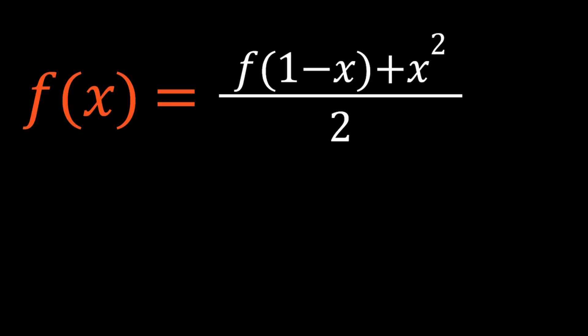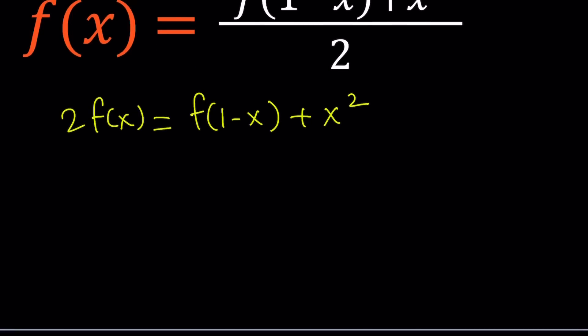To solve this problem, let's first cross multiply. That gives us 2f(x) equals f(1-x) plus x². Then put both f's on the same side by subtracting f(1-x), and we get our equation. We're trying to find an expression for f(x) by using substitution.